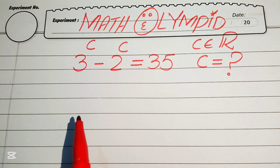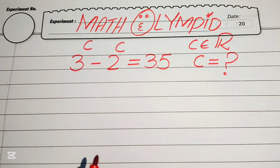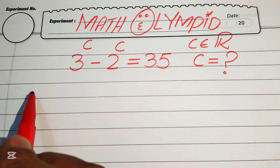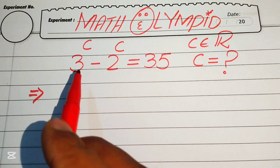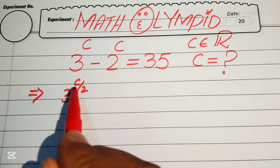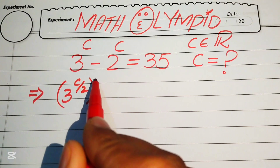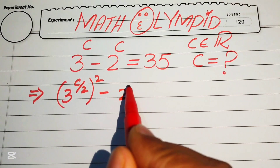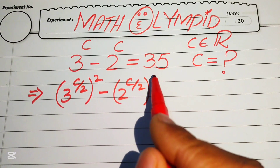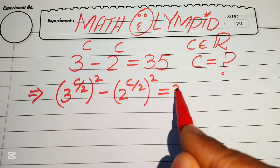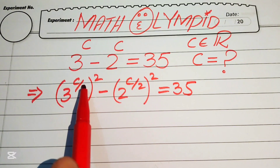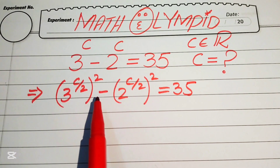The very first step is to multiply and divide the exponents of these two terms by 2, so that it will be written as (3 to the power of c/2) whole squared minus (2 to the power of c/2) whole squared, and this equals 35. We can multiply and divide both exponents by 2 and write the expression in this form.